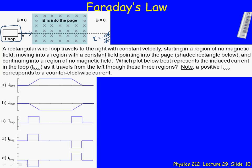I'm going to immediately eliminate A and D because here you see a large current representing when the loop is all the way in the magnetic field. And when the loop's all the way in the magnetic field, the flux is not changing. There'll be a large flux, but it won't be changing. So A and D are actually representing the flux through the loop.